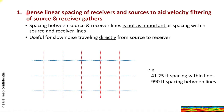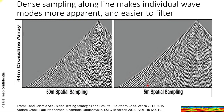Here's an example of dense linear spacing of sources and receivers. The spacing between the lines is not as important as spacing within the lines. This is useful for slow noise traveling directly from the source and receiver. Sample acquisition parameters are 41 and a quarter foot spacing and 990 foot spacing between lines. Here with 50 meter sampling versus 5 meter sampling, you can see what was disorganized noise — surface waves and guided waves — now becomes nicely organized. A velocity filter would be very effective at removing both of these types of noise.